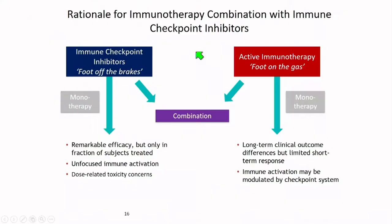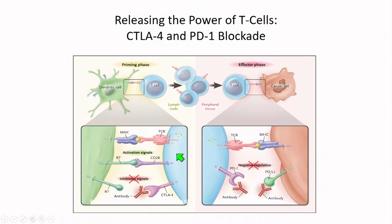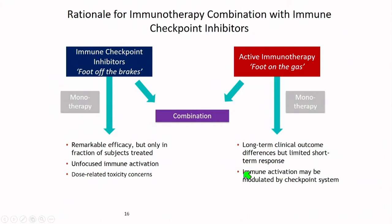This is a very important concept — understanding where these interactions take place. The rationale for immunotherapy combined with immune checkpoint inhibitors is that anti-PD-1, PD-L1, and CTLA-4 inhibitors, when blocked, release the suppression and upregulate effector T cells. Blocking PD-1 or PD-L1 removes the normally negative regulatory effect. These are the critical links between innate and adaptive immunity.